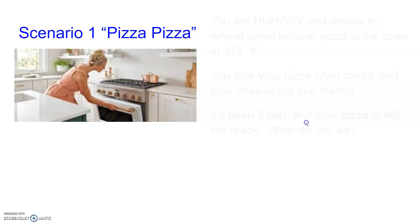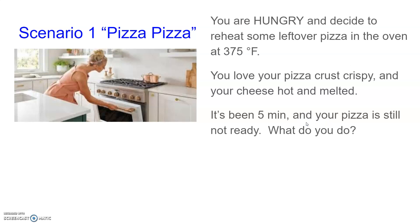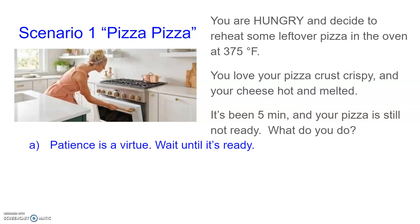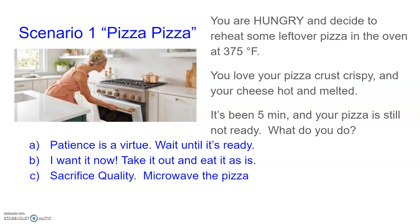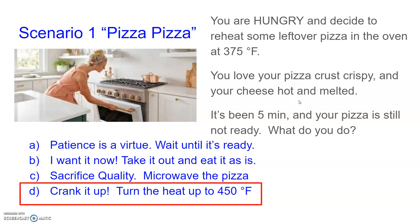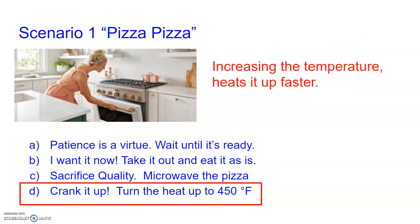The first scenario is 'Pizza Pizza.' You're hungry and decide to reheat leftover pizza in the oven at 375°F — you want the crust crispy and the cheese hot and melted. But after five minutes, the pizza still isn't ready. What would you do? A) Wait — patience is a virtue. B) Take it out and eat it as is. C) Sacrifice quality and microwave it. Or D) crank it up and turn the oven to 450°F. If you're like me, you'd choose D — you don't want to sacrifice quality, but you want it quicker. Choice D highlights the relationship between increasing temperature and heating the pizza faster.